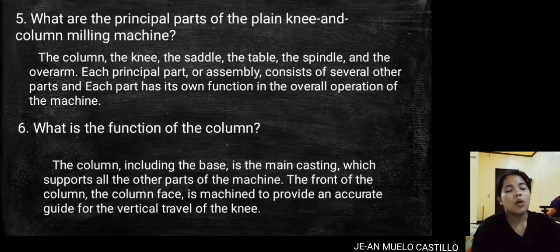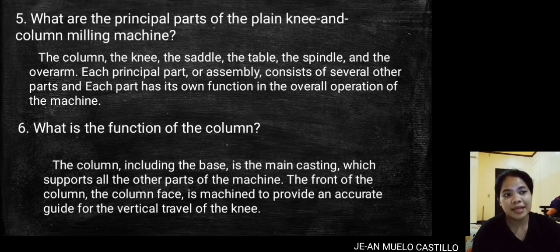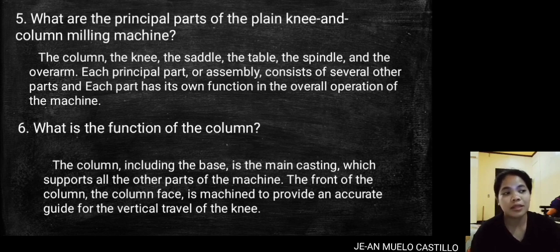What are the principal parts of the plain knee and column milling machine? The principal parts are the column, the knee, the saddle, the table, the spindle, and the overarm. Each principal part or assembly consists of several other parts, and each part has its own function in the overall operation of the machine.